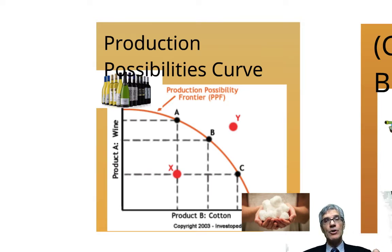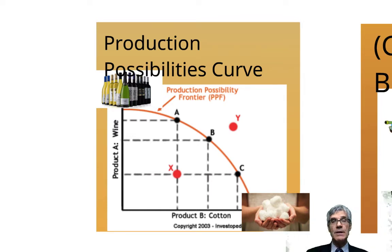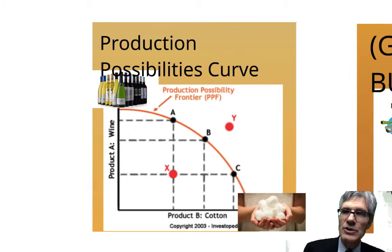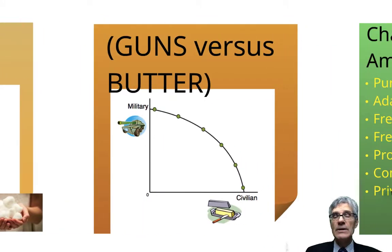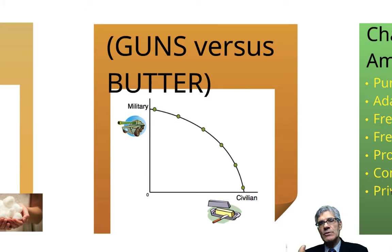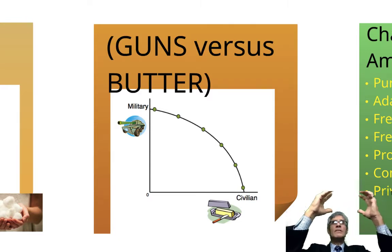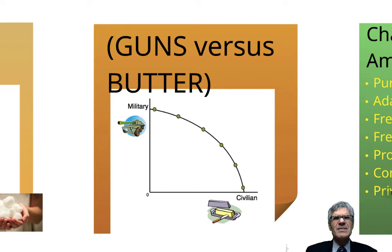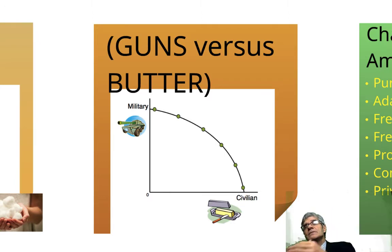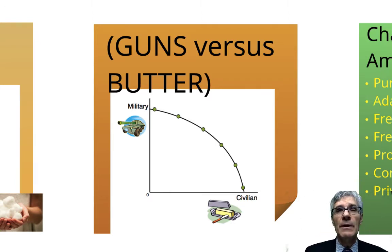Choice A: you're making a lot of wine and not as much cotton. Choice B: less wine and more cotton. Choice C: a lot of cotton and a little wine. That's a production possibilities curve. The most widely used example is guns and butter, because every society like the US has civilian needs — toilet paper, butter in the marketplace, gasoline for cars — but also military spending. If you're like North Korea, you put all your money into the military and people starve by the millions.